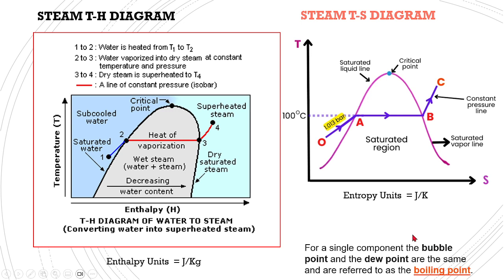The next diagram shows the TH diagram — temperature versus enthalpy. Again, here the critical point is shown; left of that we call subcooled water. As you add heat, the subcooled water reaches the saturation liquid line, then processes through the wet steam or wet gas zone, and then reaches the dry steam region — we call it superheated steam or dry saturated steam — and thereafter reaches the superheated steam region.